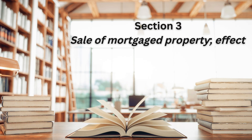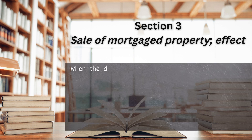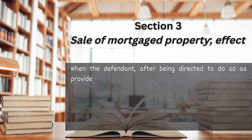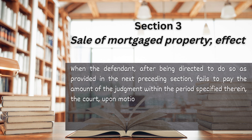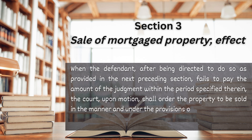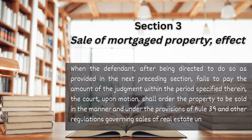Section 3. Sale of Mortgaged Property Effect. When the defendant, after being directed to do so as provided in the next preceding section, fails to pay the amount of the judgment within the period specified therein, the court, upon motion, shall order the property to be sold in the manner and under the provisions of Rule 39 and other regulations governing sales of real estate under execution.